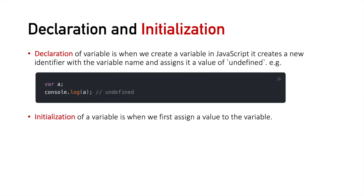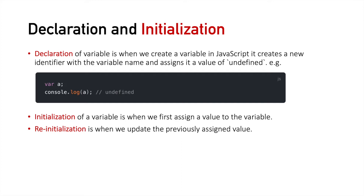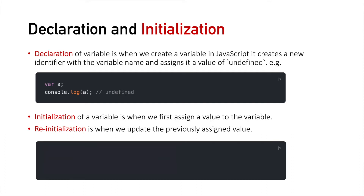Initialization of a variable is when we first assign a value to the variable. Similarly, re-initialization is when we update the previously assigned value of a variable. For example, when we create a variable 'a' and do not assign any value to it, it is called declaration. Then if we assign a value 1 to variable 'a', this is called initialization. Furthermore, if we change the value of 'a', it will be called re-initialization.